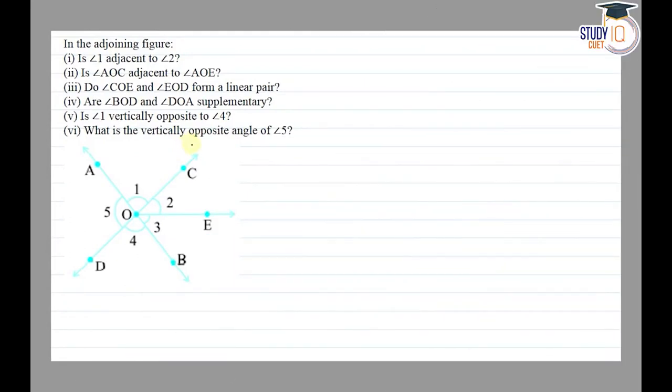Hello everyone, this question appears in Class 7th NCERT chapter of lines and angles. This is the 9th question of exercise 5.1. So the question says that in the adjoining figure, first is angle 1 adjacent to angle 2?